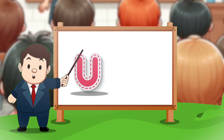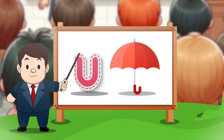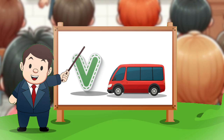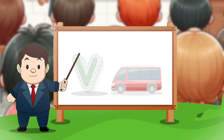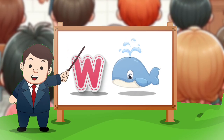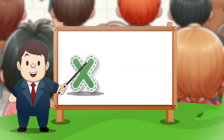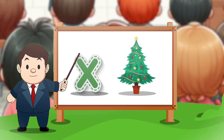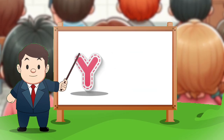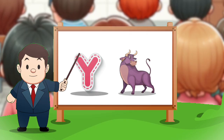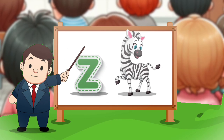U for umbrella. V for bear. W for whale. X for excels. Y for coy. Z for zebra.